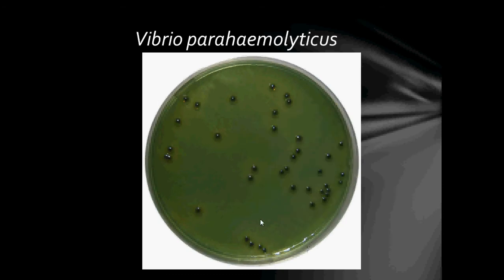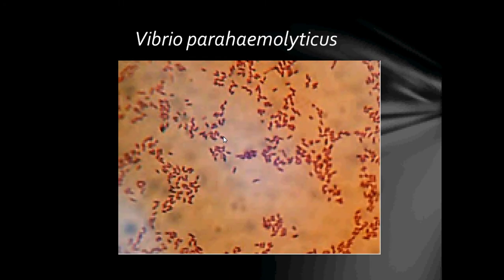This is Vibrio parahaemolyticus colonies growing on thiosulfate citrate bile salt agar. As you can see, the centre of the colonies are dark green in colour. In general, they form colonies with blue to green centres.